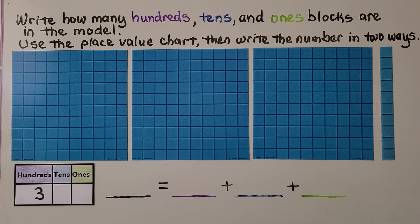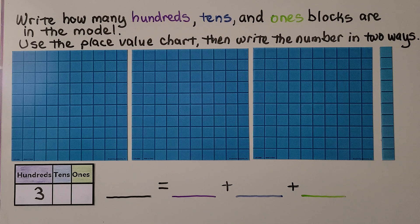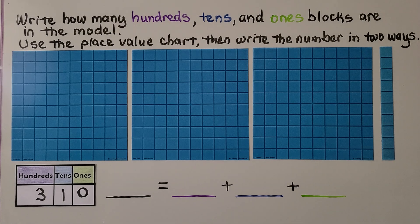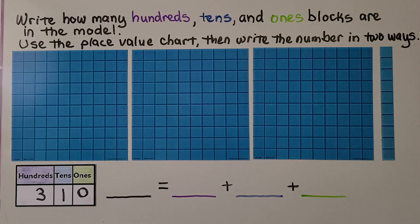We see one ten, so we're going to put a one in the tens place. There are no ones, so we have zero ones. We can write it as three hundred ten.